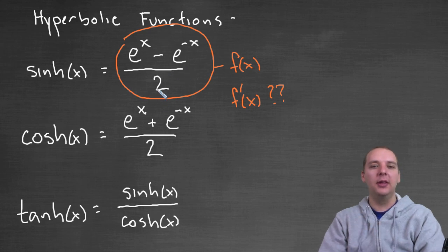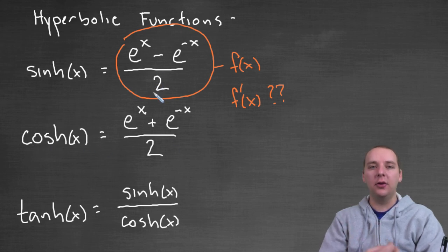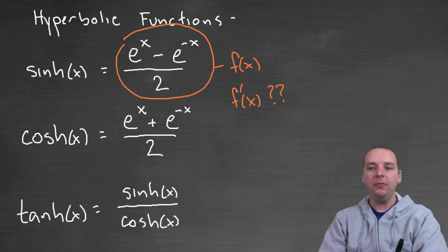Because the derivative of hyperbolic sine of x probably closely resembles, or is, the hyperbolic cosine function and vice versa. So that would be a very strong tie if the derivative of one of these in some aspects resembled the other. That would be a very interesting relationship.